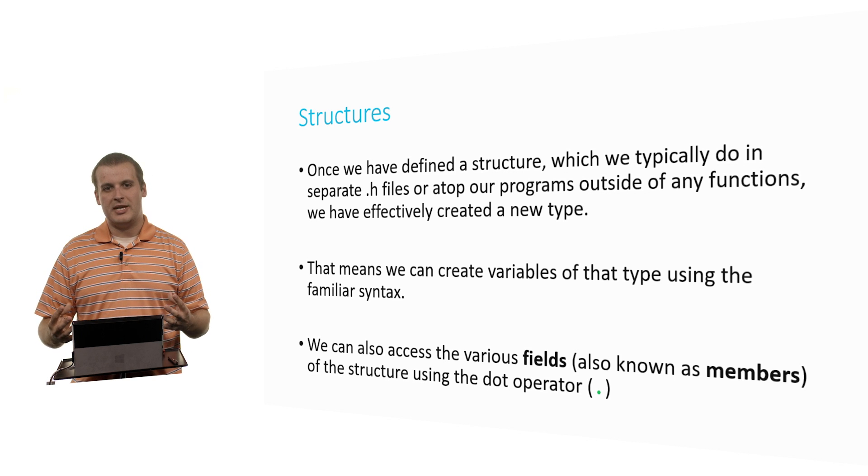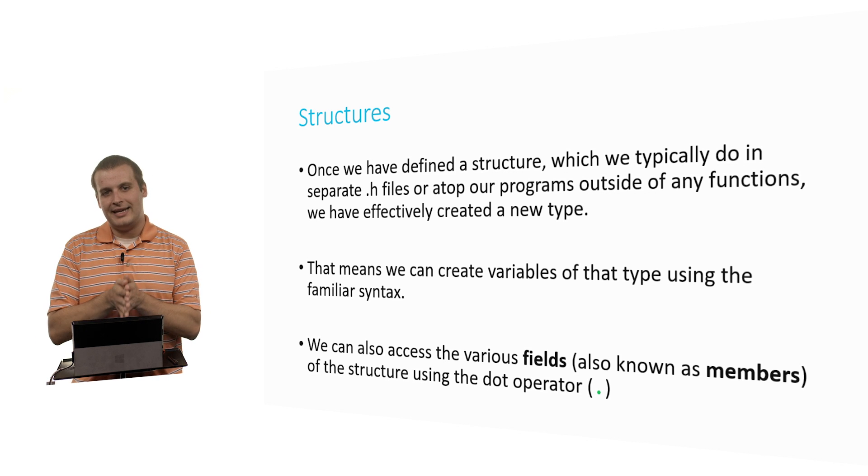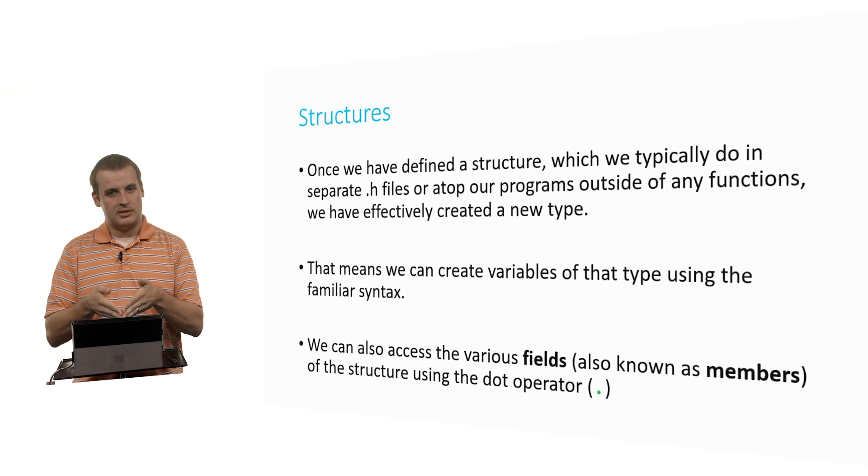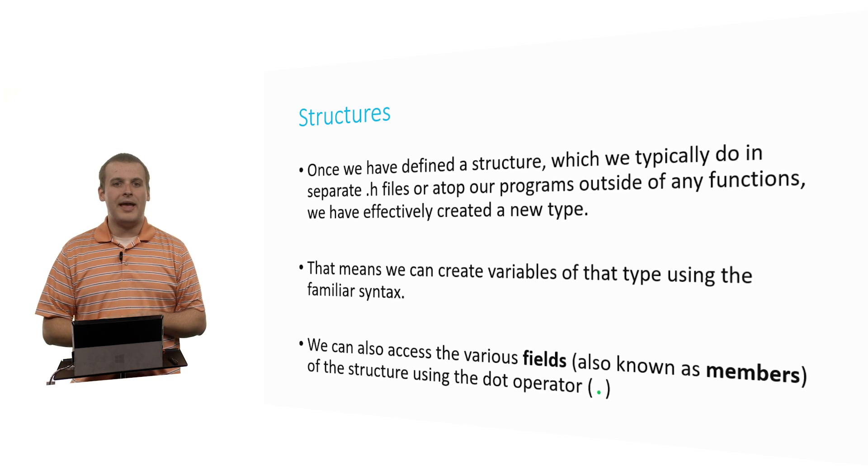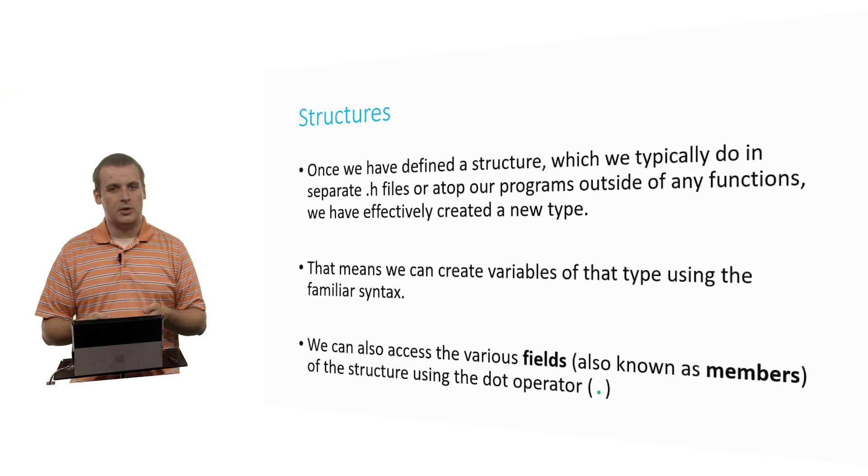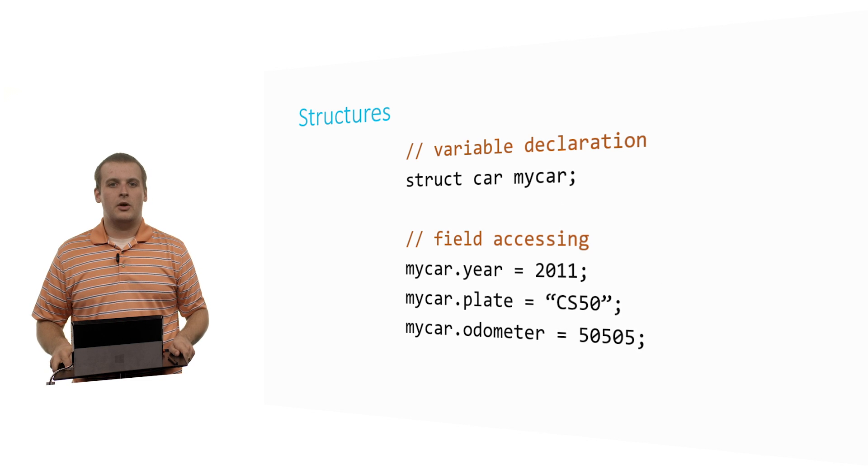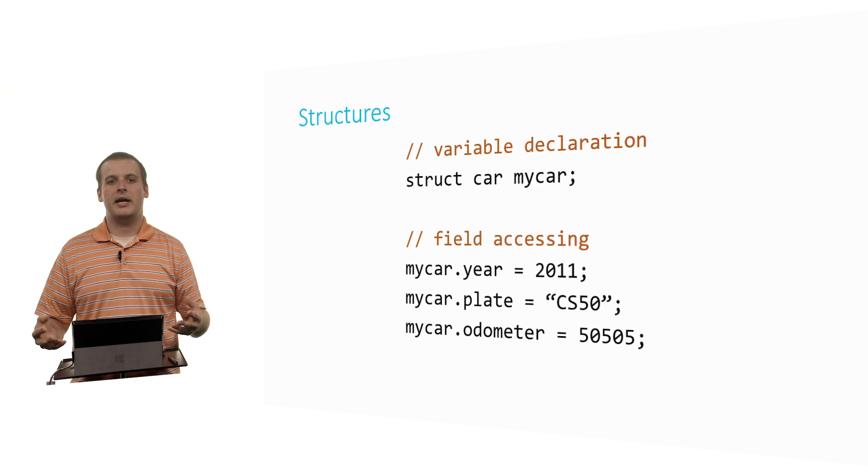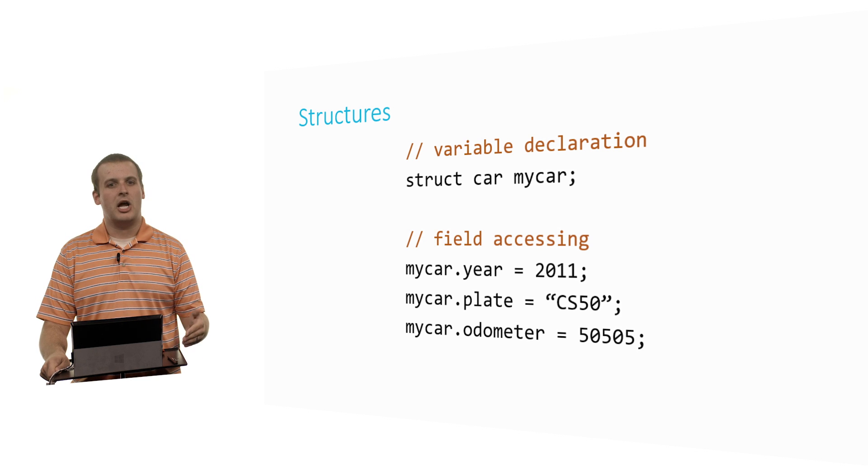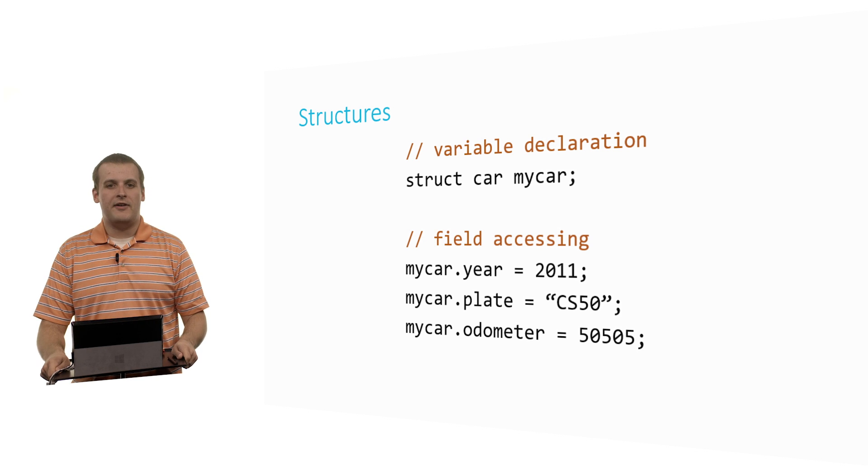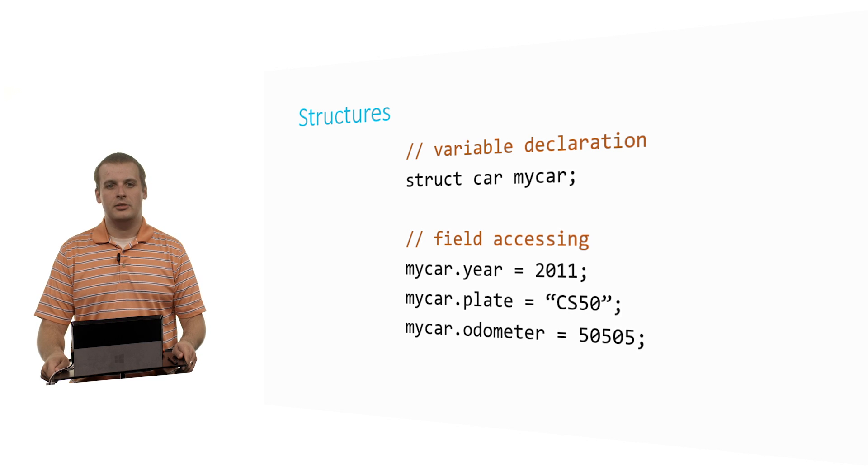So we have structures, but now we need to get inside of them. How do we get inside of the structure to access those sub variables, those variables that exist inside the structure? Well, we have something called the dot operator, which allows us to access the fields of the structure. For example, let's say I've declared my structure data type somewhere at the top of my program or perhaps in a .h file that I've pound included. If I then want to create a new variable of that data type, I can say struct car, my car, semicolon.